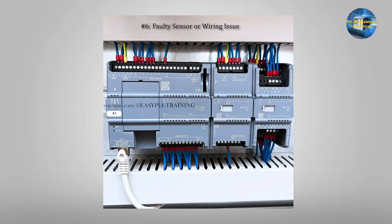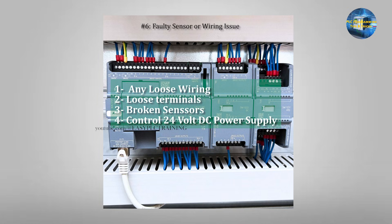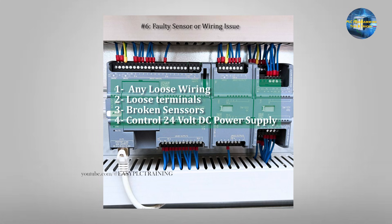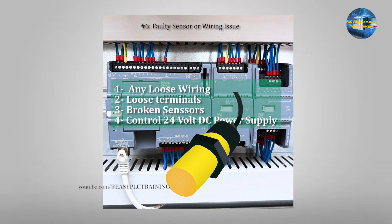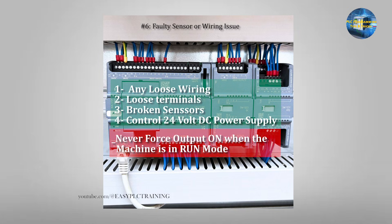Example 6: Faulty Sensor or Wiring Issue. Sometimes the program is perfect — the problem is in the hardware. You have to check for loose wires, broken sensors, and verify that the 24-volt DC control power supply is available. To fix this, simulate the inputs, force the input on temporarily, and replace or repair the damaged sensors. A safety note: never force outputs on real machinery, especially when the machine is running.